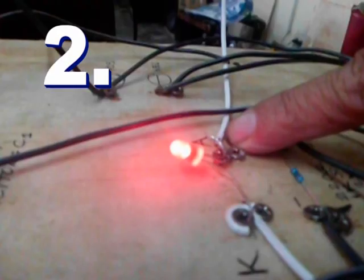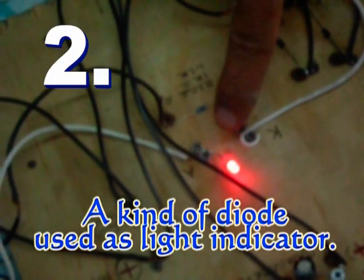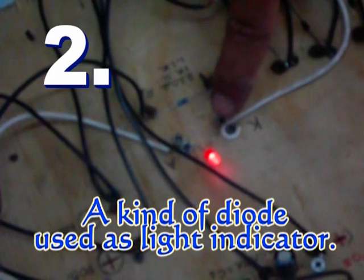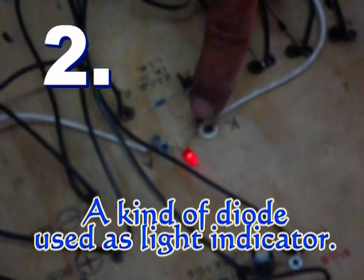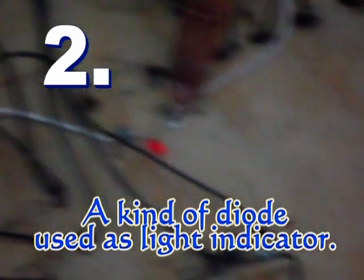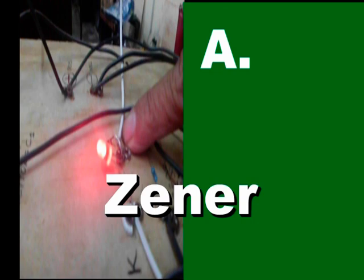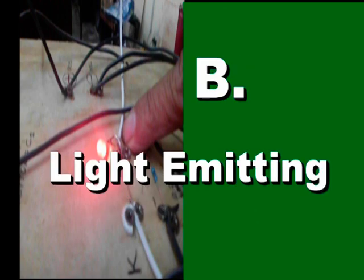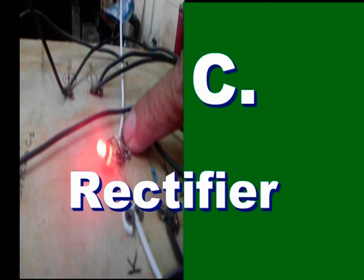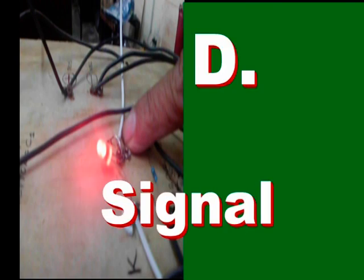Number 2. An electronic component and a kind of diode used as light indicator. A. Zener, B. Light Emitting, C. Rectifier, and D. Signal